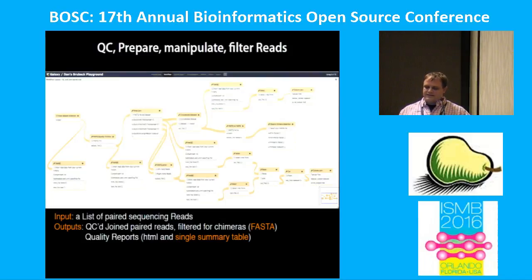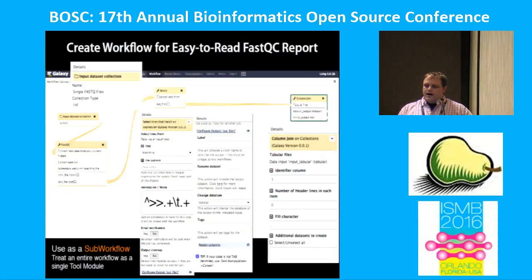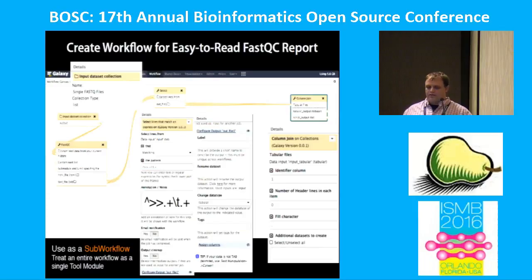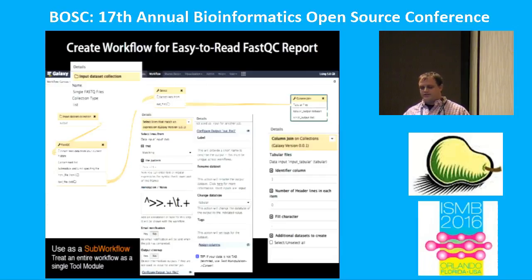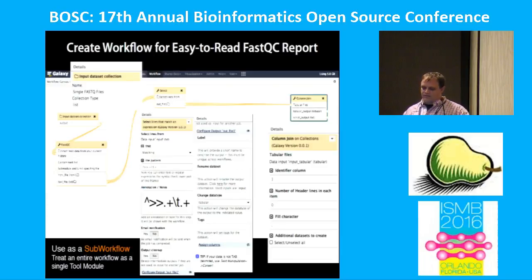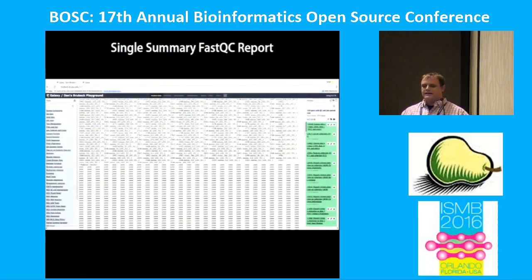The basic steps inside of this are no different than any other general high-throughput sequencing inside of Galaxy. One of the problems we have here is we want to check our sequences along the way for quality reports. But looking at 500 different FastQC reports in HTML, you're not really going to do this. So we actually have a sub-workflow, or nested workflow, that we can use in order to create a general report inside of Galaxy.